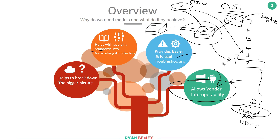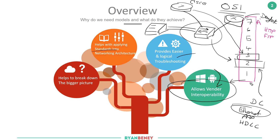The OSI model also allows logical troubleshooting. There are a bunch of troubleshooting theories that come with the OSI model: top down, bottom up, and divide and conquer. Top down would be starting at the application layer, investigating things like HTTP and FTP, whereas bottom up would be checking the physical cabling first. Network engineers are more inclined to go from the physical up, whereas software engineers may go top down.